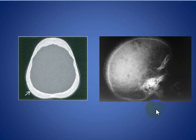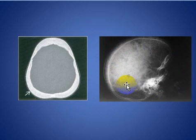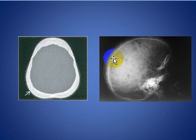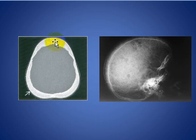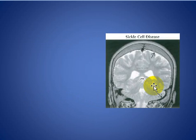This patient has chronic anemia — thalassemia — and on the lateral skull X-ray you can see the classic hair-on-end appearance with diffuse thickening of the diploic spaces due to bone marrow hyperplasia. Here is another patient with sickle cell anemia showing diffuse diploic space thickening and widening, also involving the base of the skull.